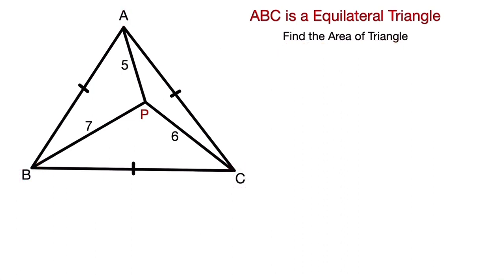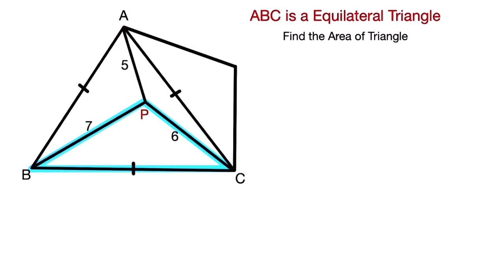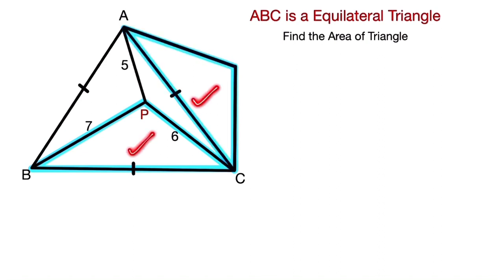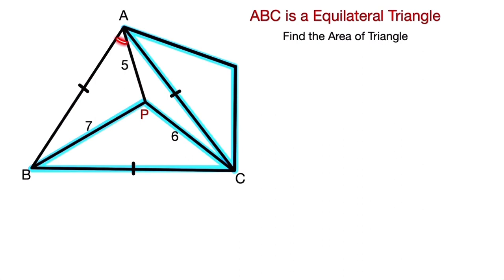So here, we first notice triangle BPC. We move this side and construct a copy at side AC — from A to C — as a copy. So this triangle and this triangle are identical copies. We know that ABC is an equilateral triangle, which means all angles are 60 degrees — this one, this one, and this one.